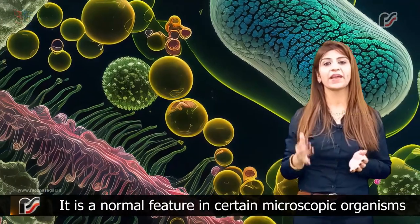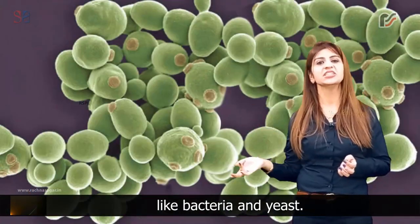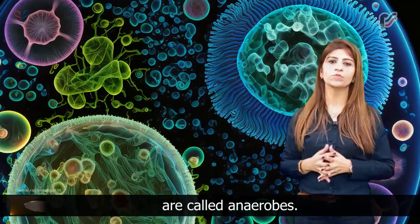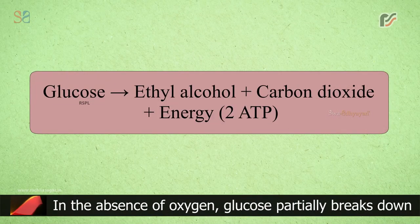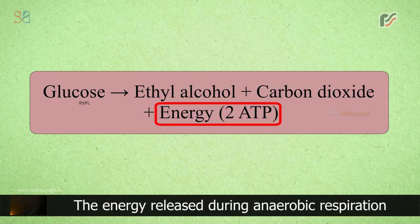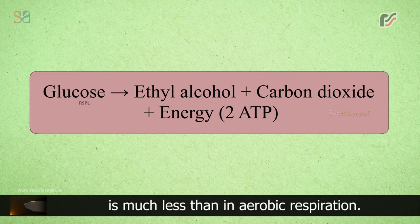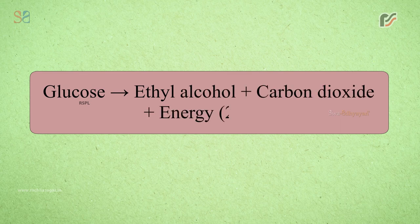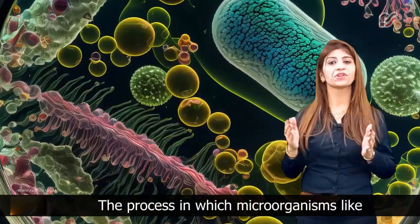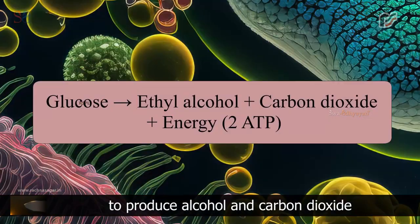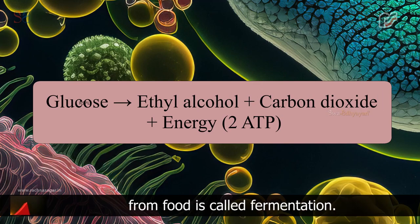Anaerobic respiration takes place in the absence of oxygen. It is a normal feature in certain microscopic organisms like bacteria and yeast. The organisms that can survive in the absence of oxygen are called anaerobes. In the absence of oxygen, glucose partially breaks down into carbon dioxide and ethyl alcohol (ethanol). The energy released during anaerobic respiration is much less than in aerobic respiration: glucose → ethyl alcohol + carbon dioxide + energy (2 ATPs). The process in which microorganisms like yeast and bacteria respire anaerobically to produce alcohol and carbon dioxide from food is called fermentation.